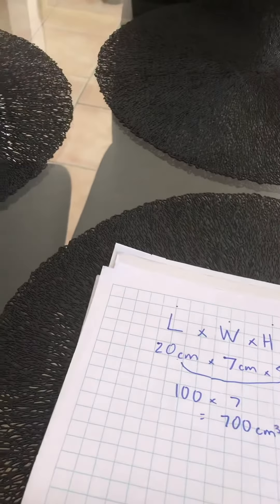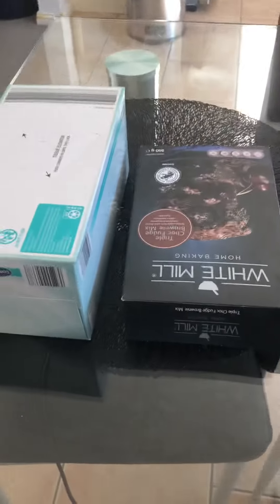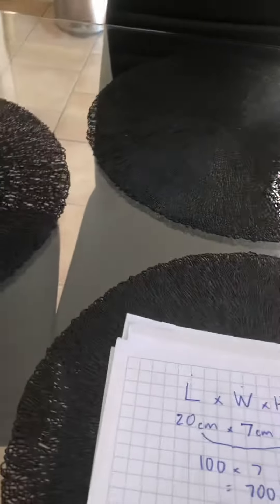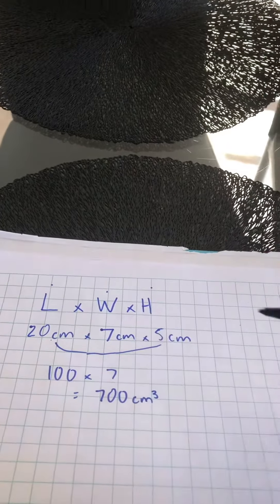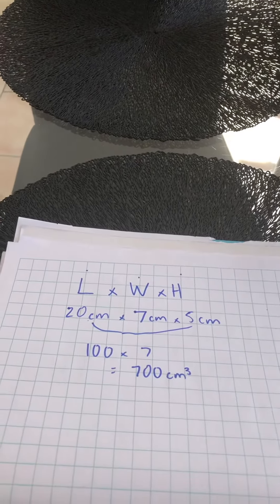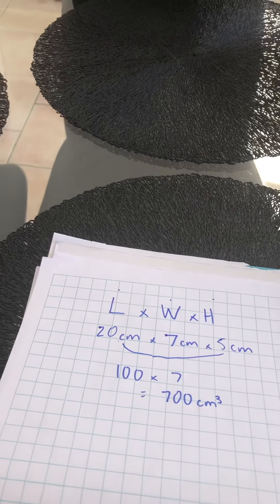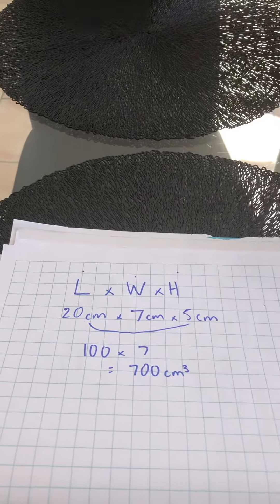I would need to do the same thing with that rectangular box here as well for my brownie box. I would look at the length, the width, and the height and multiply those three numbers together to find out how much space those rectangular or cuboid boxes take up in the world.